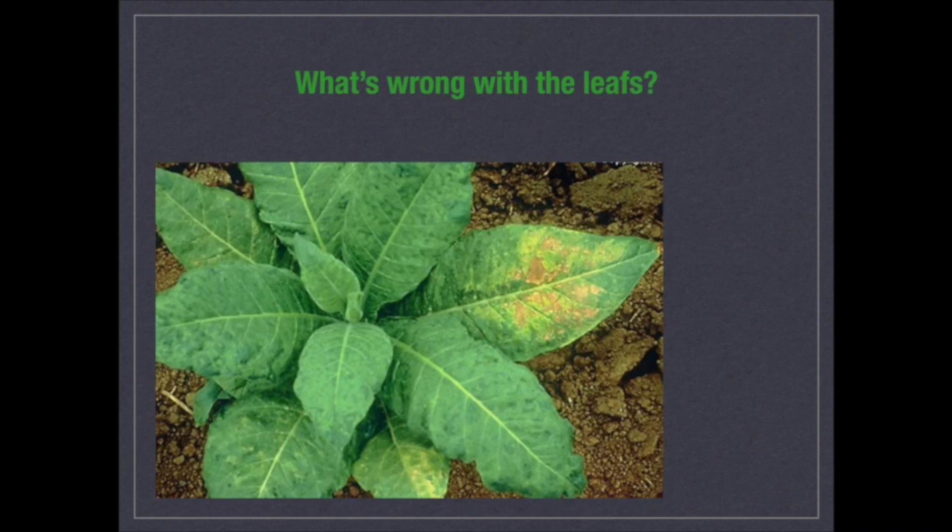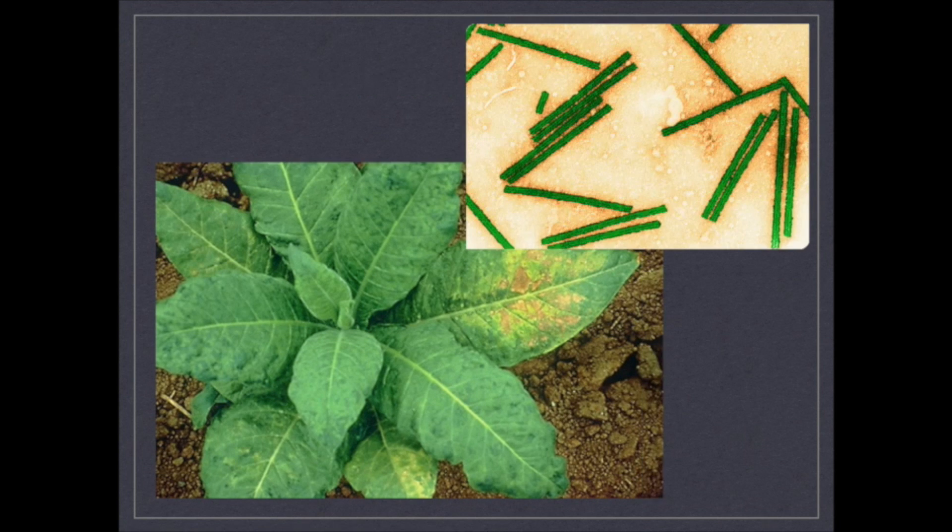Now, what is wrong with these leaves? As you can see on the left side, there are brown spots in one of the leaves. You would be amazed to know that back in 1886, it was believed that these brown spots were caused by bacteria. But it wasn't until the early 1930s when it was discovered that what was causing this disease in the plant was not a bacteria. Indeed, it was a virus.